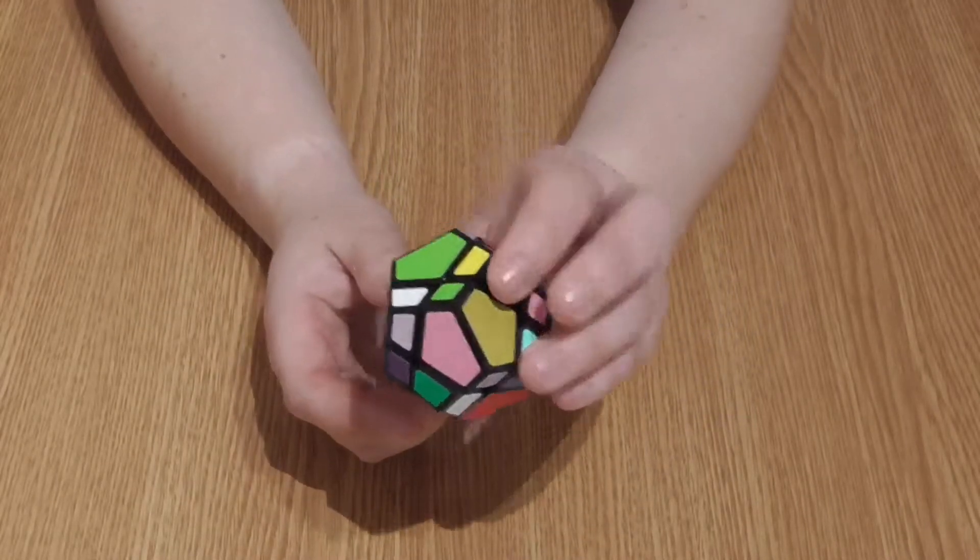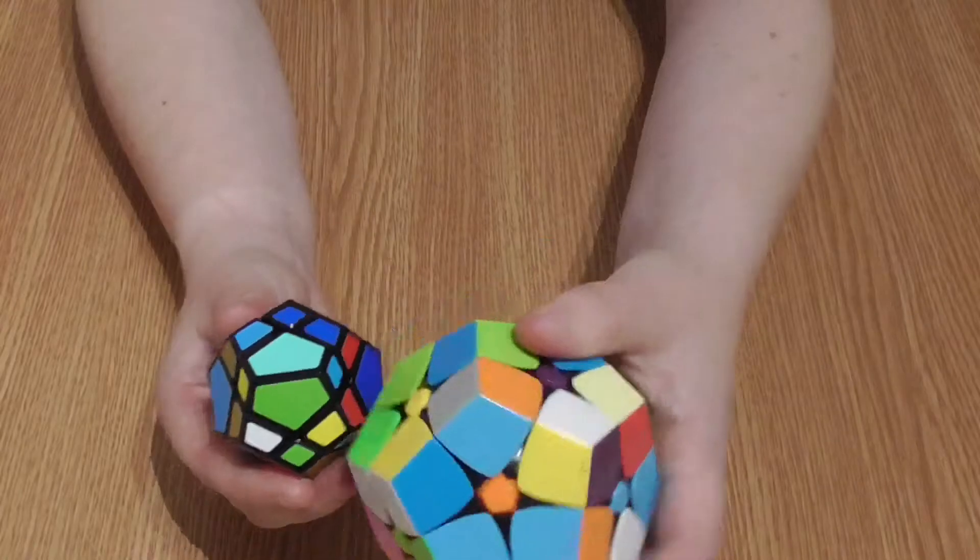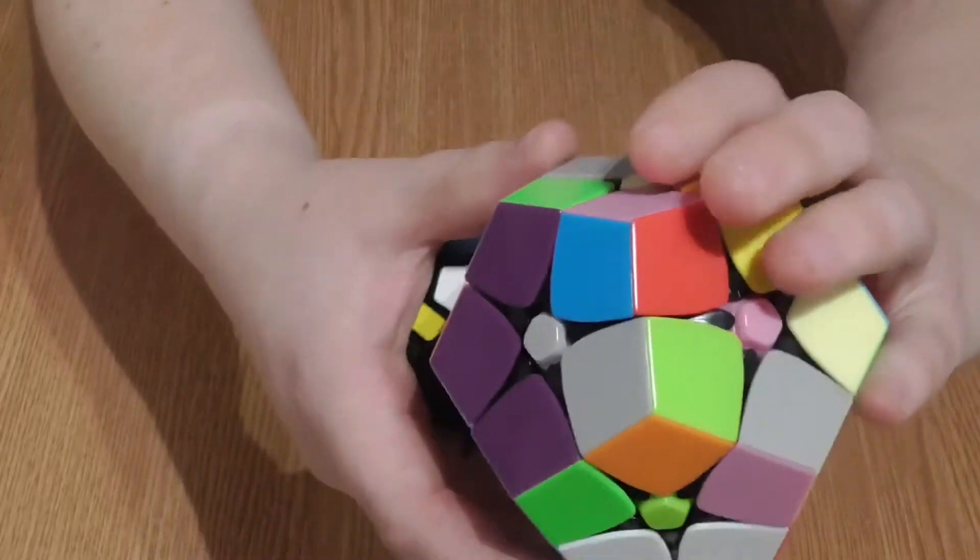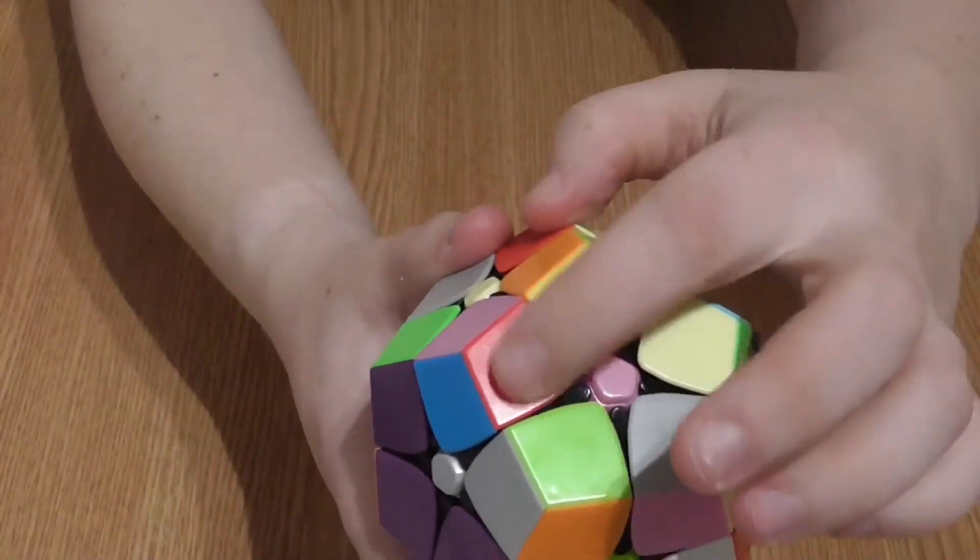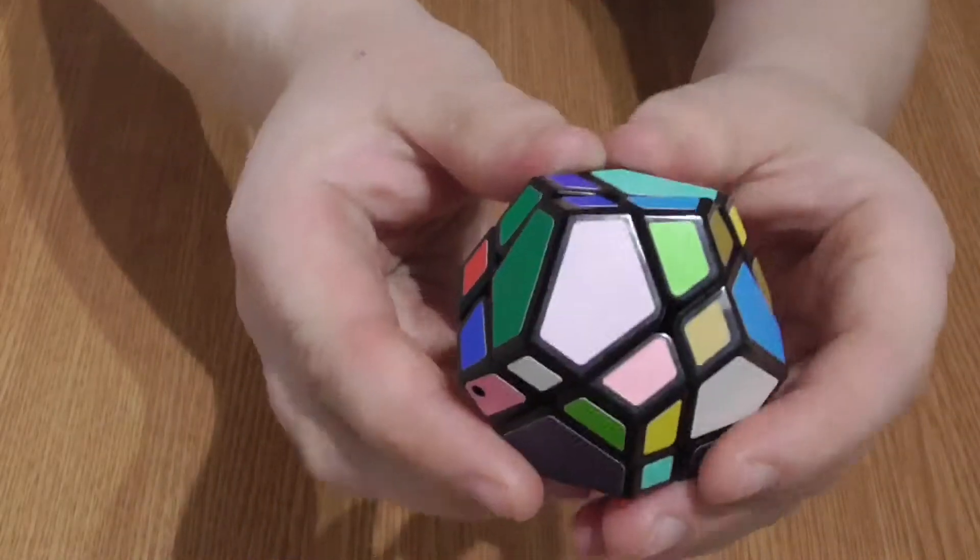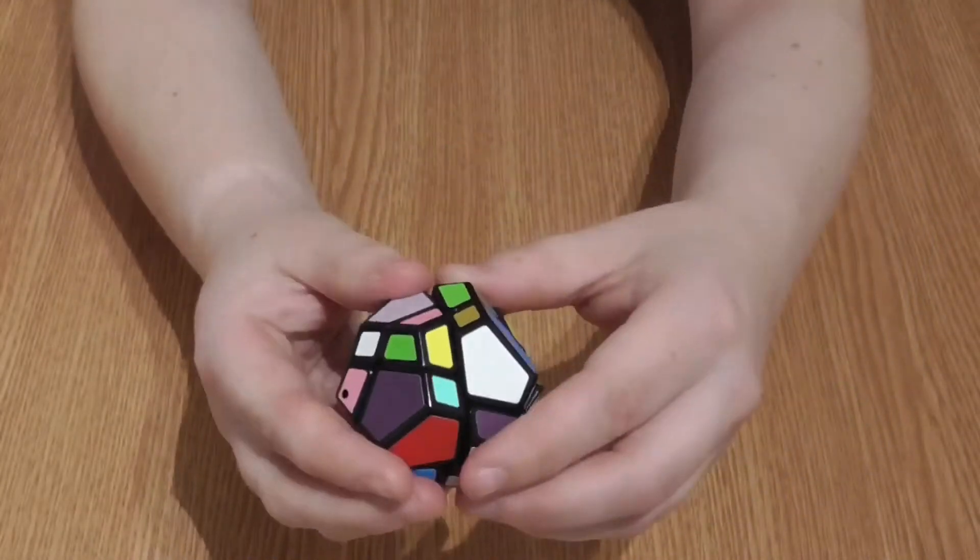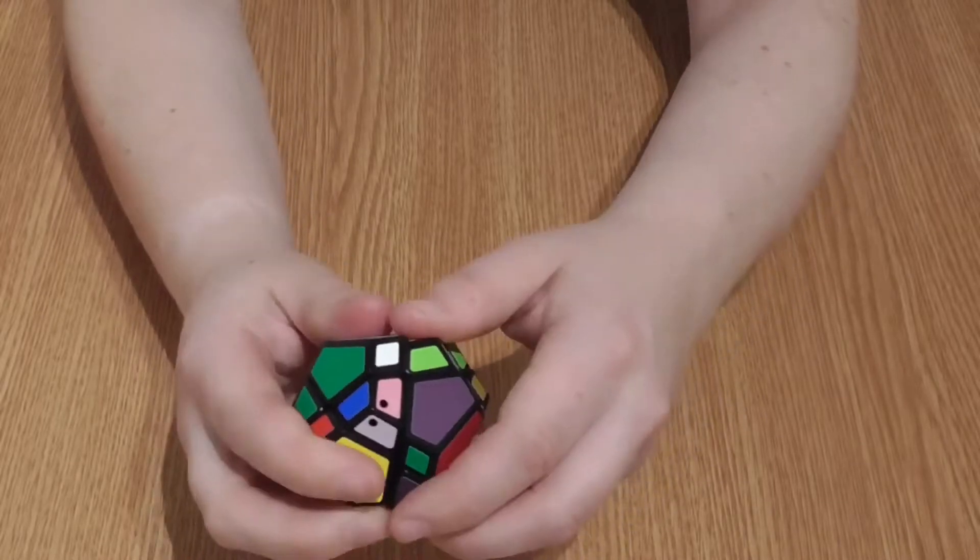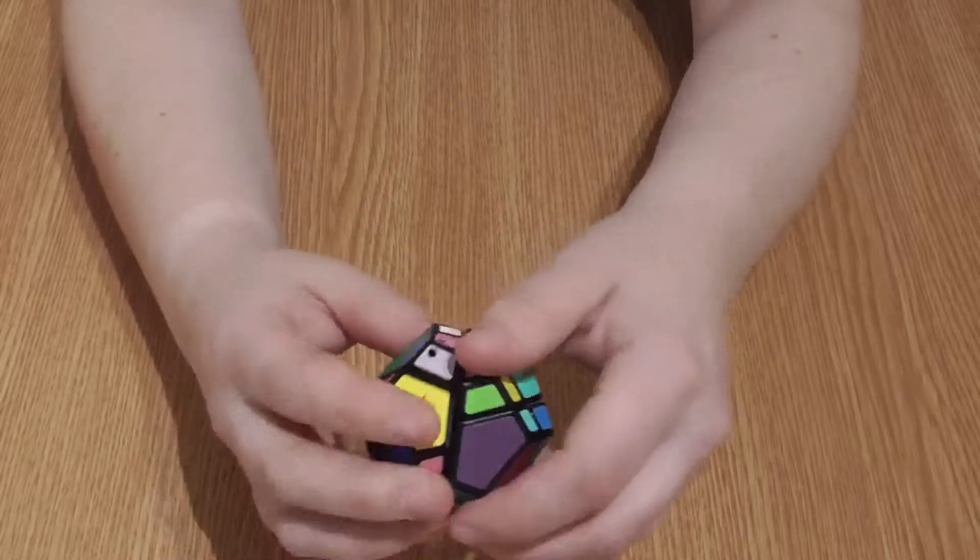Next, this one is the same shape as this one. But whereas this one, all of the pieces on the end are even. So the way it turns is different. It turns more like a traditional cube.